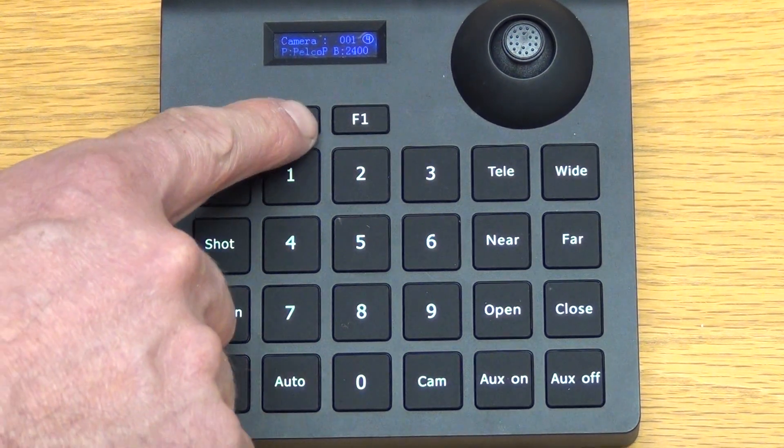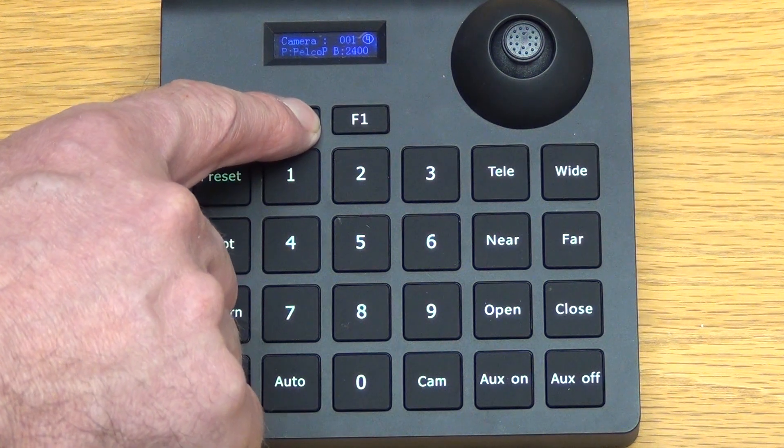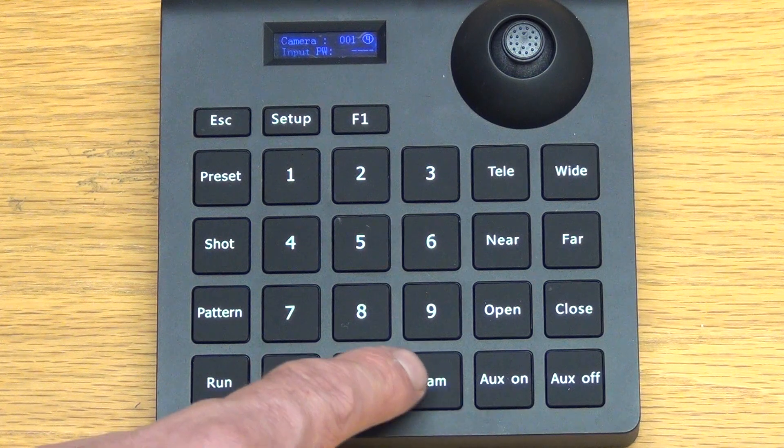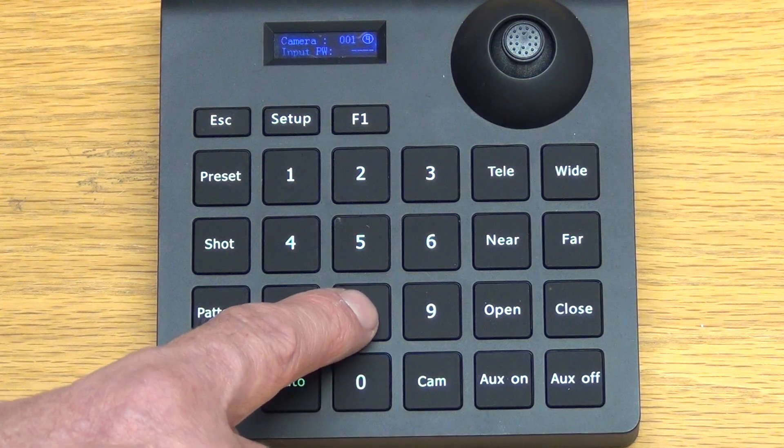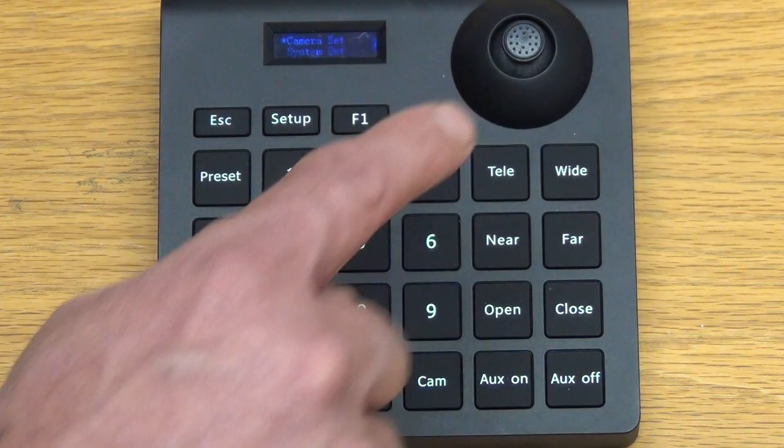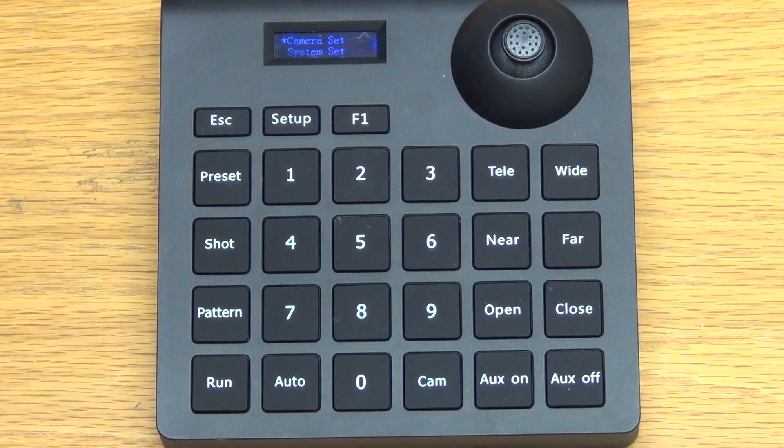The first thing I'm going to do is I'm just going to come along, I'm going to push down and hold down the setup button for about three seconds or so. It'll ask me for the password and I just simply enter 8888 and then I push down here and it says it's a camera setup.